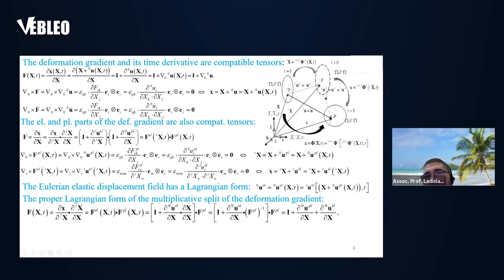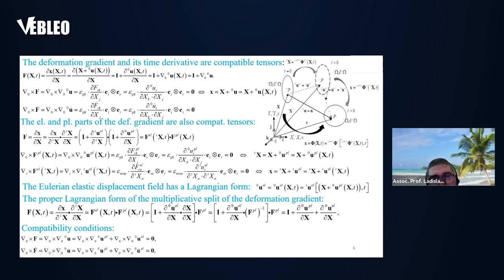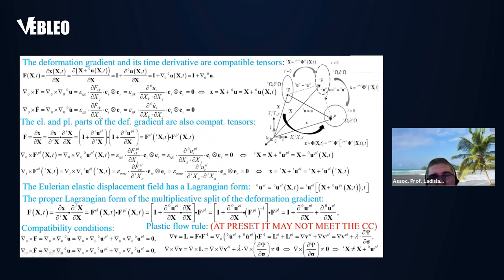Returning to the time derivative equation: the time derivative of the plastic deformation gradient also has to be compatible. When we substitute this equation, we arrive at the result that both the plastic deformation gradient — or the gradient of the plastic velocity field — and the gradient of the velocity field have to meet the conditions of compatibility. This equation is closely related to the flow rule.